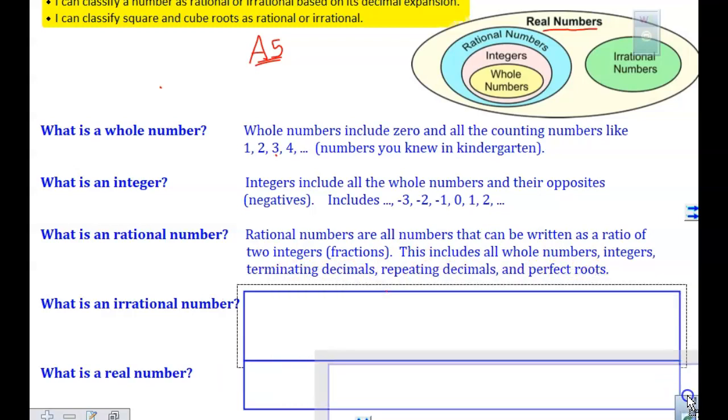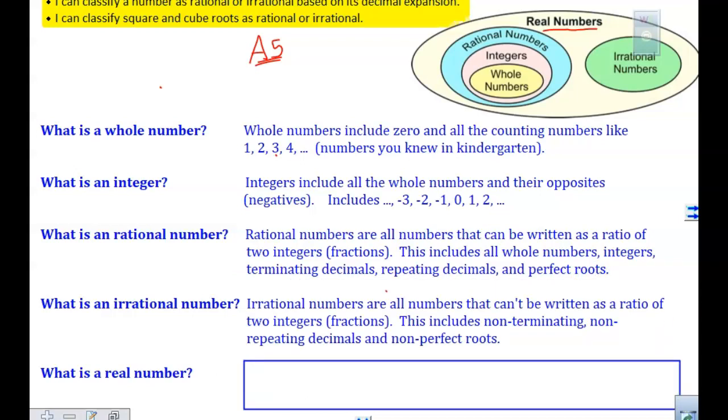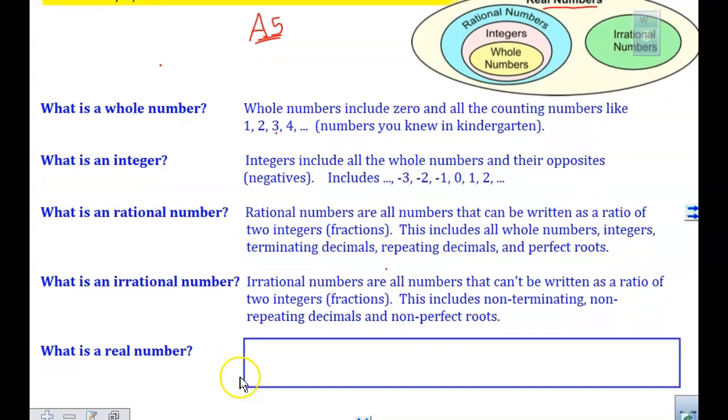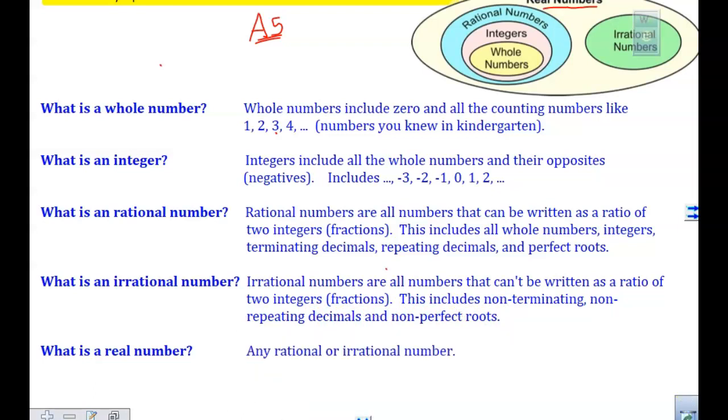What are our irrational? Irrational numbers are numbers that cannot be written as a ratio of two integers or fractions and include non-terminating so that they never end and they never repeat. And it would be our non-perfect roots. The last one is what is a real number? A real number is going to be all of our rational and irrational numbers.